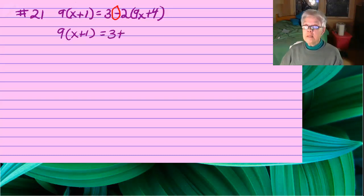We're going to have 9 parentheses x plus 1 equals 3 plus negative 2 times 9x plus 4. If you rewrite the equation this way, you're going to be much less likely to make a mistake.